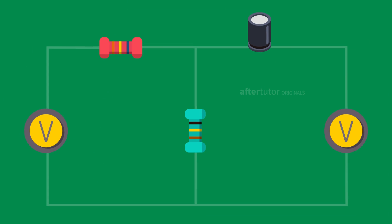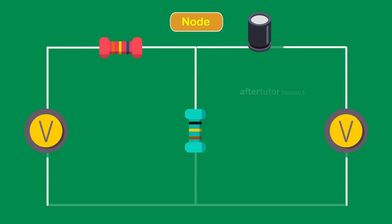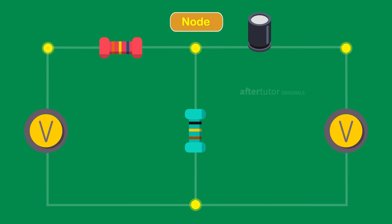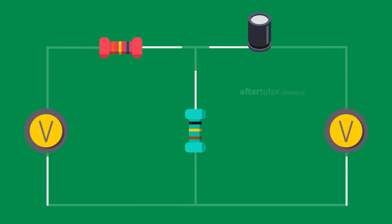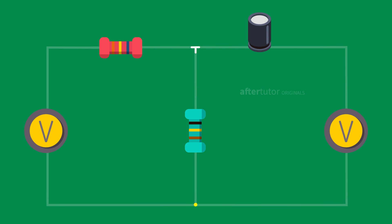Terminologies in a network include node. A node is a point where two or more circuit elements get connected. Similarly, a point which connects three or more circuit elements is the junction node.